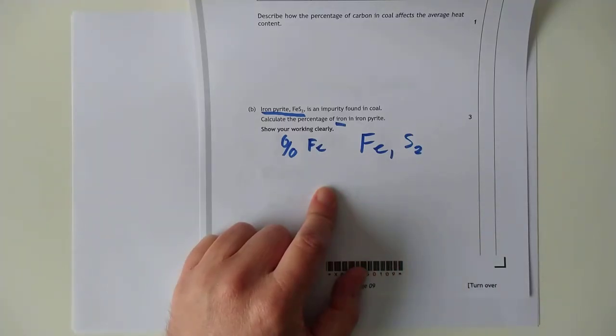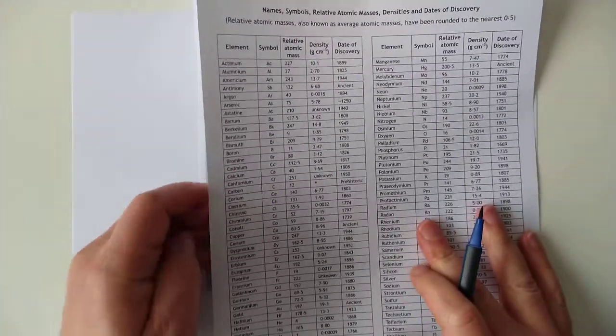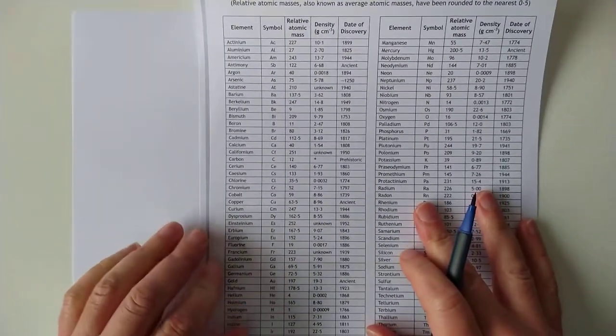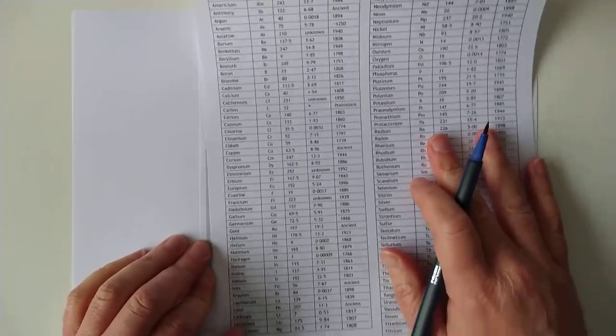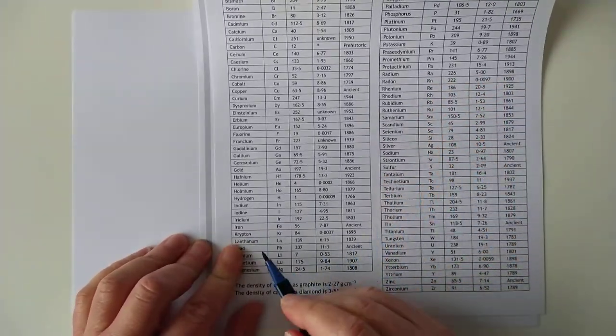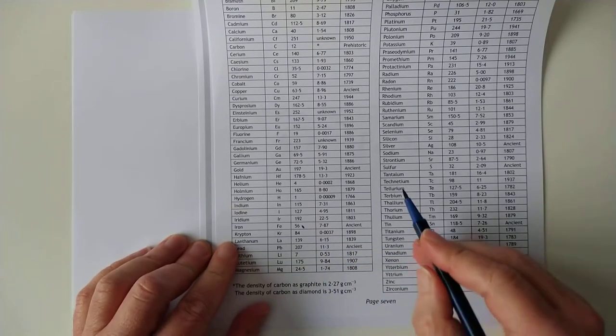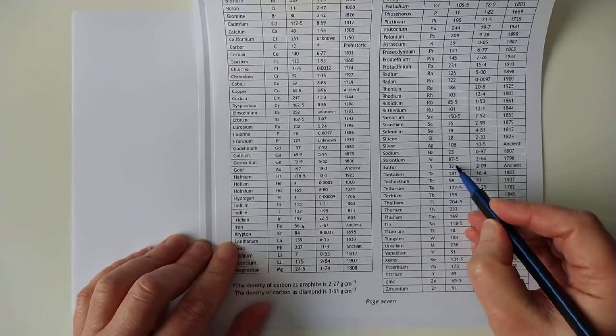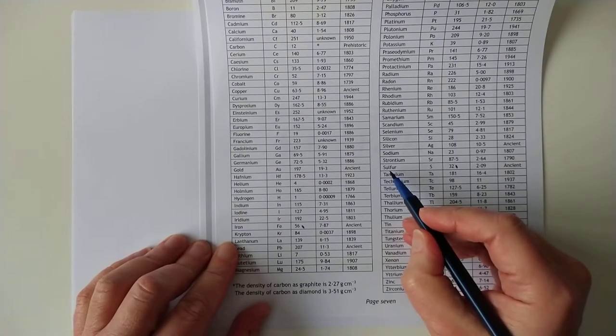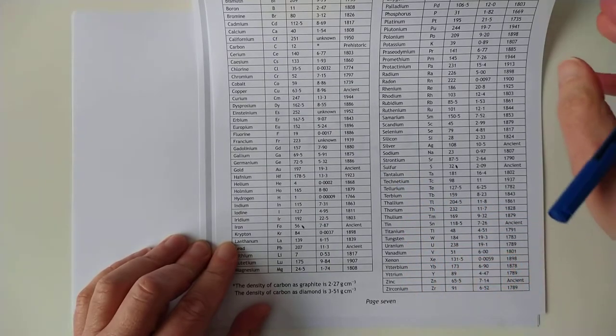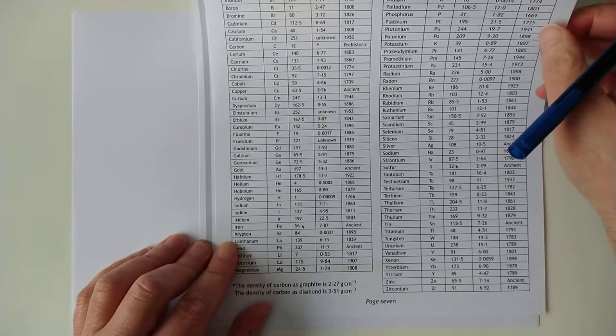For which we need the world's least readable page from the data book, which I've got here. We need to know iron and we need to know sulfur. The order is alphabetical. So iron is here at 56, and sulfur is here at 32. Please excuse me if I write sulfur with a PH. It's because I'm very old.